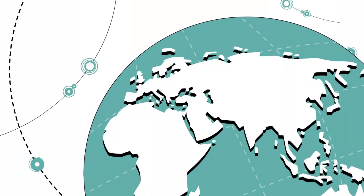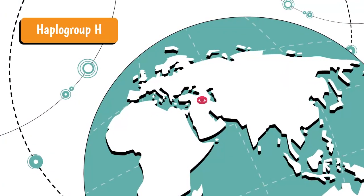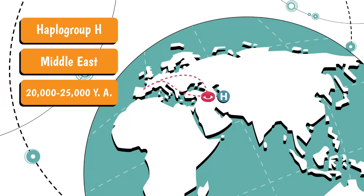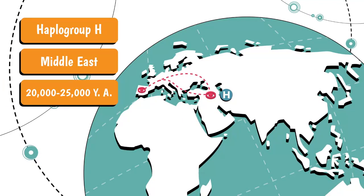You belong to the maternal haplogroup branch H. Haplogroup H is believed to have originated in the Middle East 20,000 to 25,000 years ago. It first expanded in the areas surrounding the northern Middle East and later spread westward into Europe.